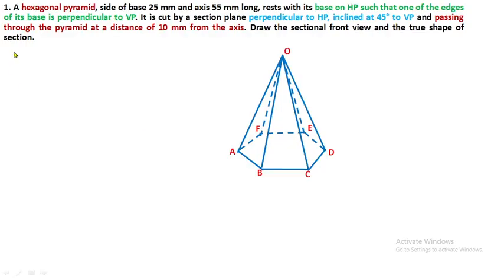Hello friends, in this video we will discuss one more section of solids problem: the hexagonal pyramid. The hexagonal pyramid has a side of base 25 mm and axis 55 mm long, with its base on HP such that one of the edges of its base is perpendicular to VP.